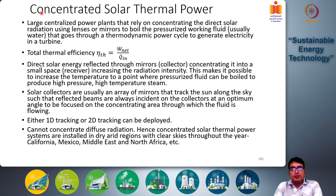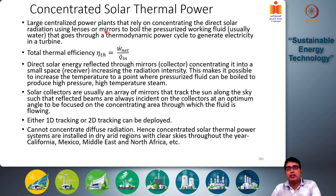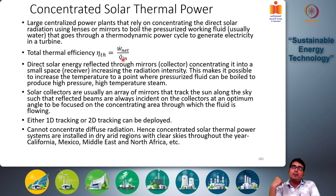Concentrated solar thermal power plants are large centralized power plants that rely on concentrating direct solar radiation using lenses or mirrors to boil a pressurized working fluid — usually water — that goes through a thermodynamic power cycle to generate electricity in a turbine. The total thermal efficiency is the net electrical work output divided by the net heat input, which is the solar heat absorbed by the mirrors.